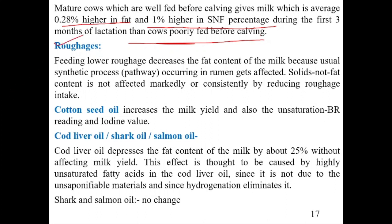Feeding lower roughage decreases the fat content of milk because the usual synthesis of fat in the rumen gets affected. The rumen microorganisms produce acetate, which is a precursor for fat synthesis in milk. However, the SNF content is not markedly or considerably affected by reducing the roughage intake.